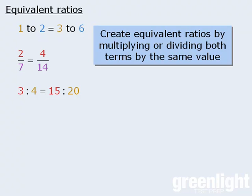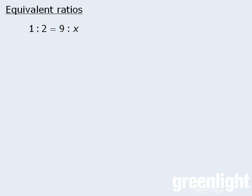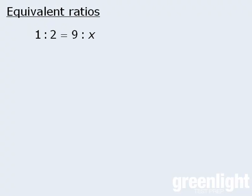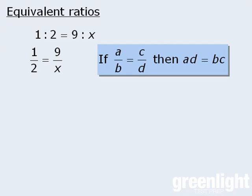A common question type related to equivalent ratios is one where we are told that two ratios are equal and we need to solve for some unknown value. To solve this type of question, we first rewrite the equivalent ratios using fraction notation and then apply the cross-multiplication rule. When we cross multiply and simplify the right-hand side, we get x equals 18. So the ratio one to two is equal to the ratio nine to 18.